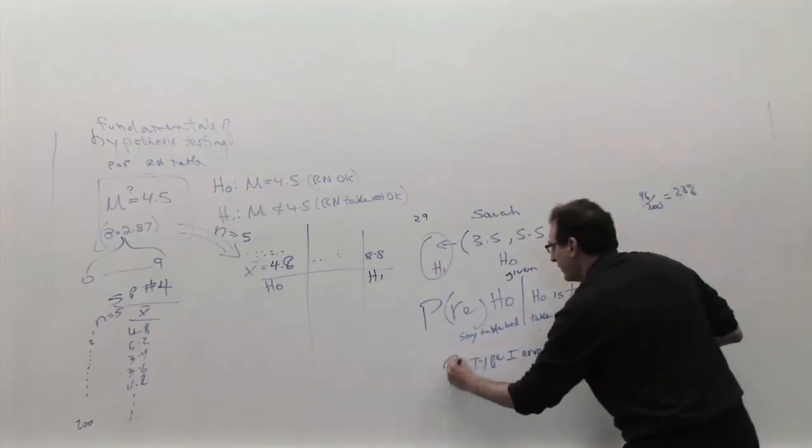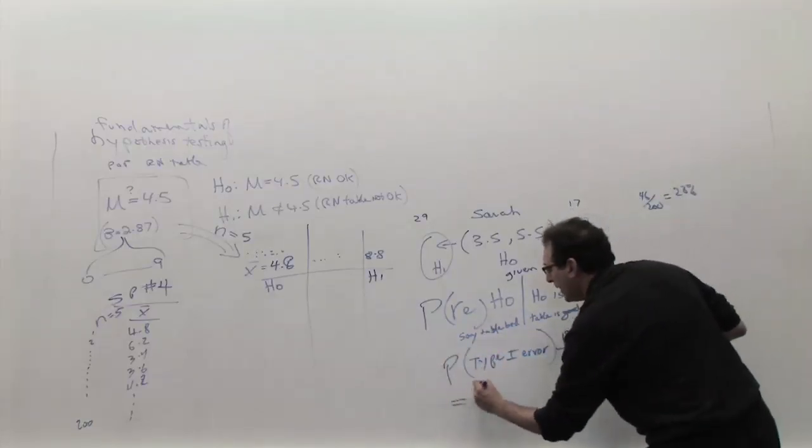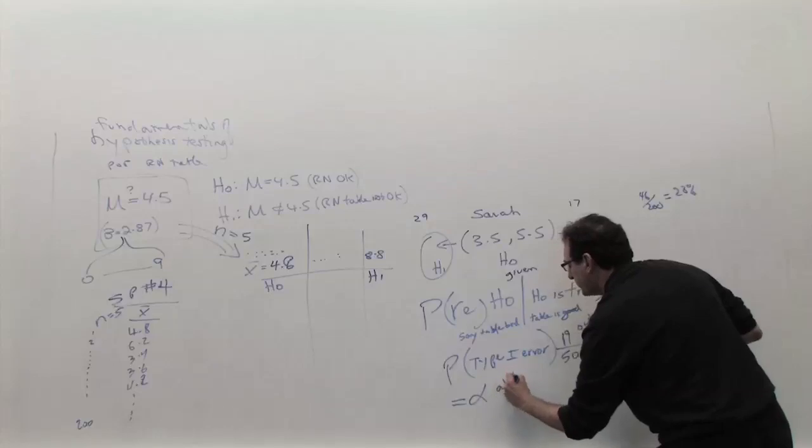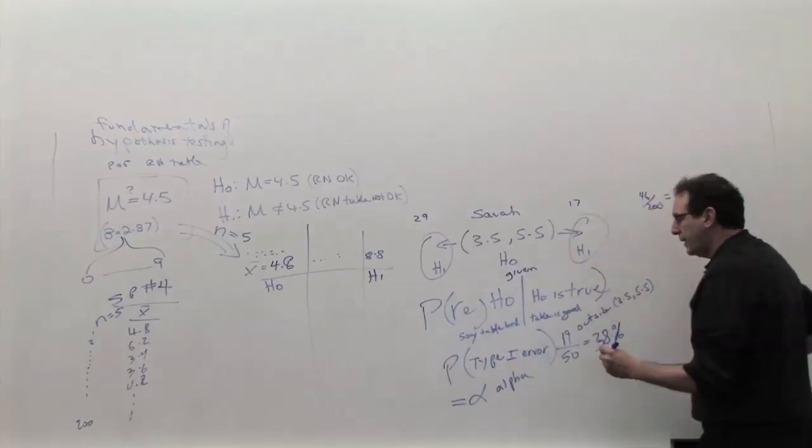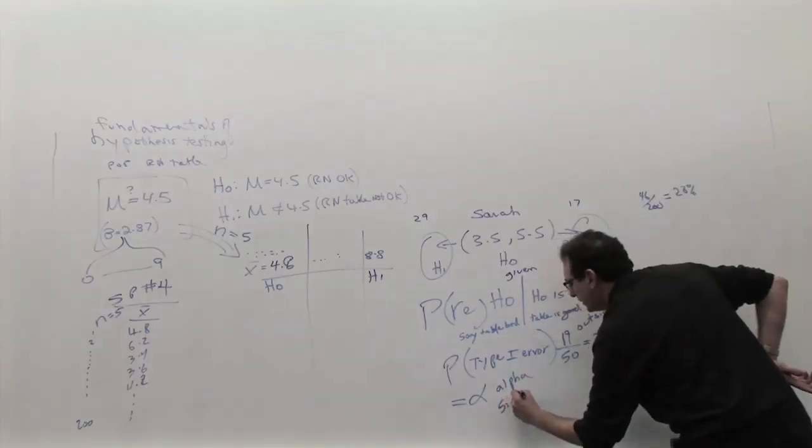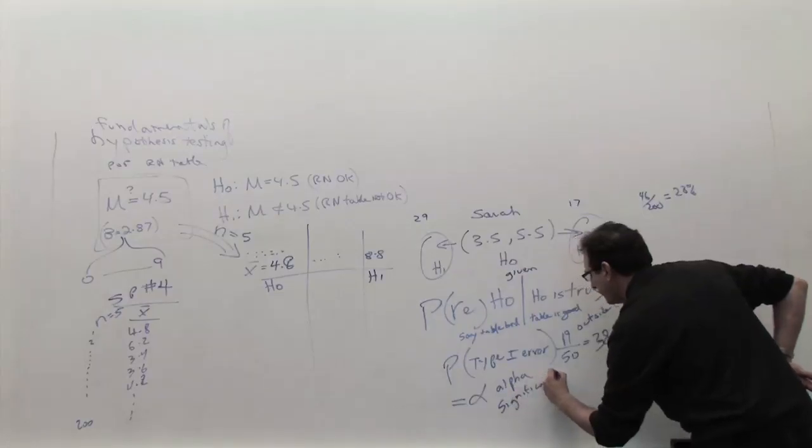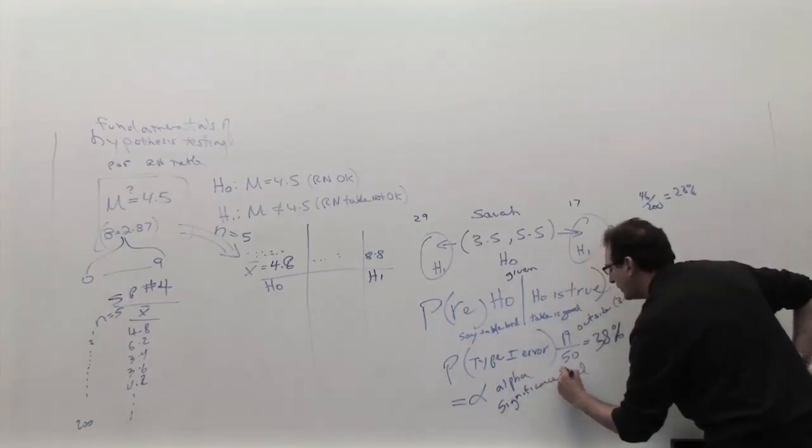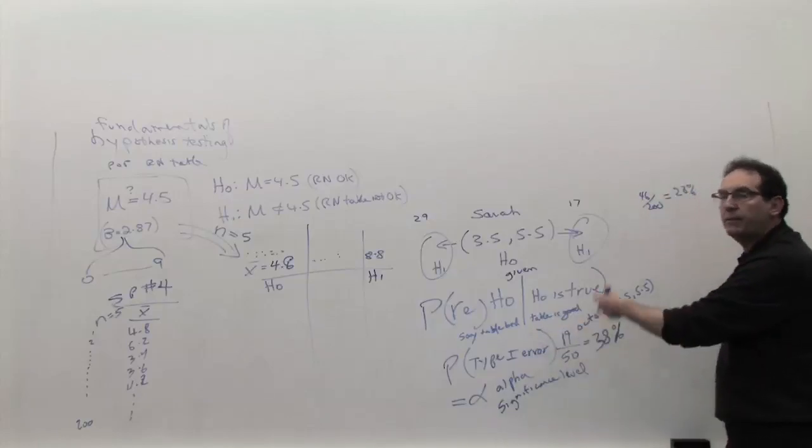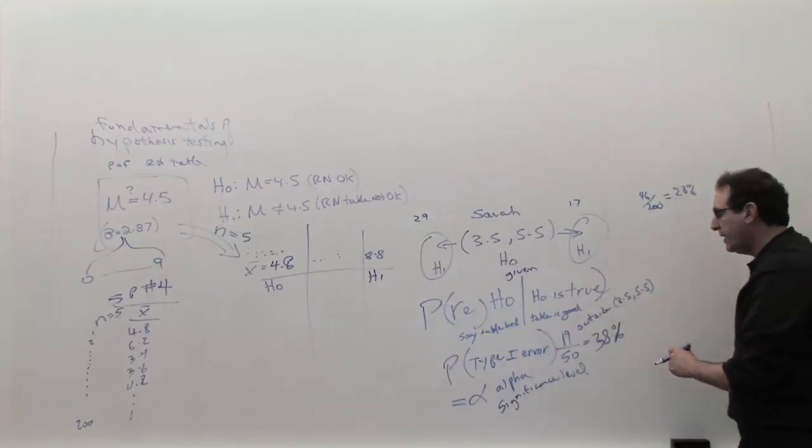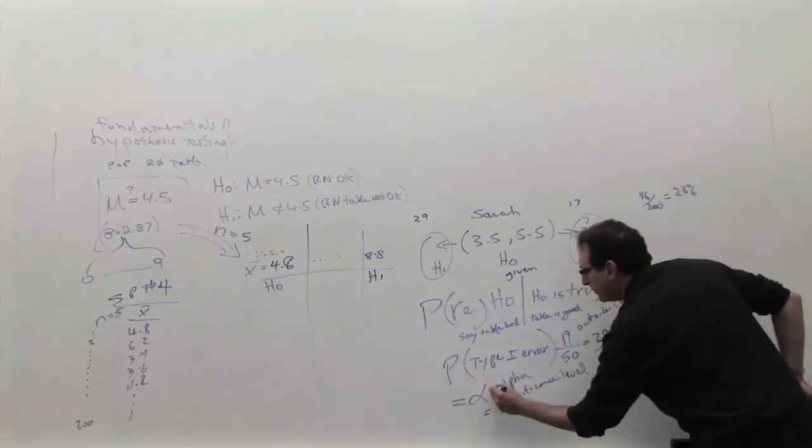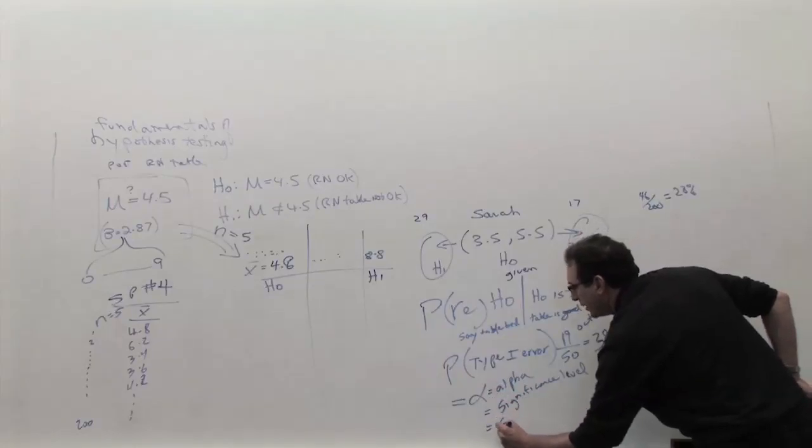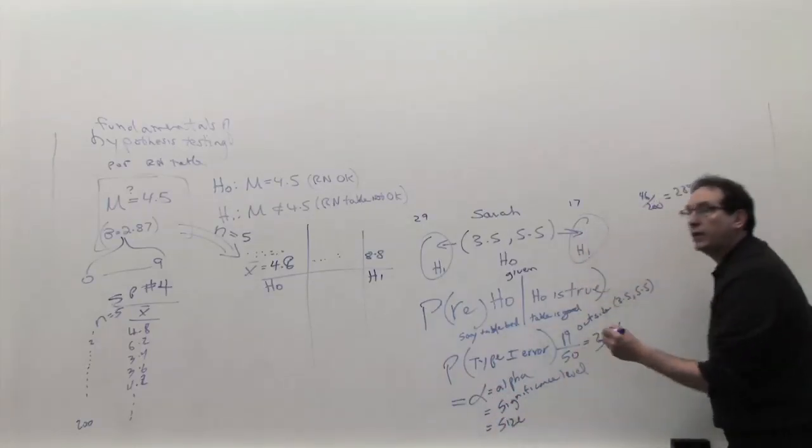The probability of a Type I error is called alpha, first Greek letter. It's also called the significance level sometimes. Because the book will say, do the example using a significance level of 5%. That means you want to make a Type I error of 5%. And it's also called the size of the rejection region. We'll see that in a second, why it's called the size of the rejection region.